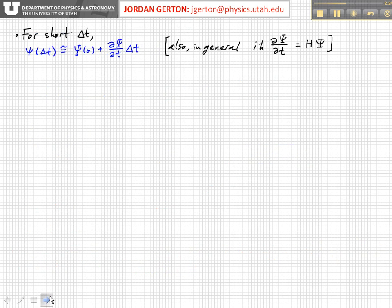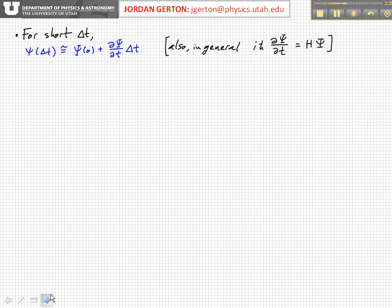So if delta t, the duration for which the perturbation is on, is short, then we can approximate the wave function after that short time delta t equal to, approximately equal to the wave function that you started with.